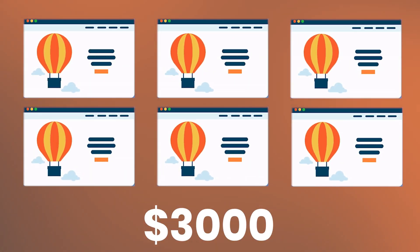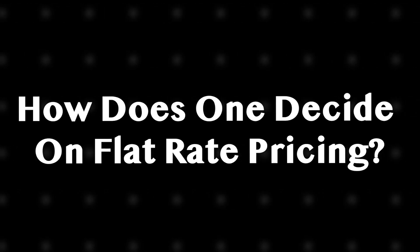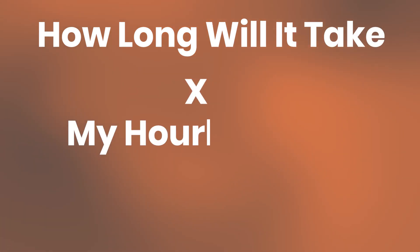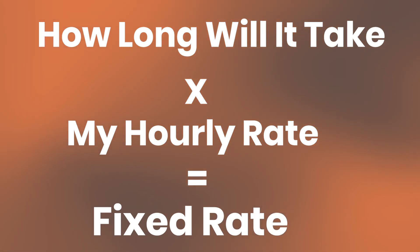An example of this could be: I'm going to charge you three thousand dollars for a six-page website — that's the scope of work, that's the price. To decide how much to charge, I look at the number of pages and the complexity, estimate roughly how long it will take, and multiply that by my hourly rate. That's how you set a flat rate price.